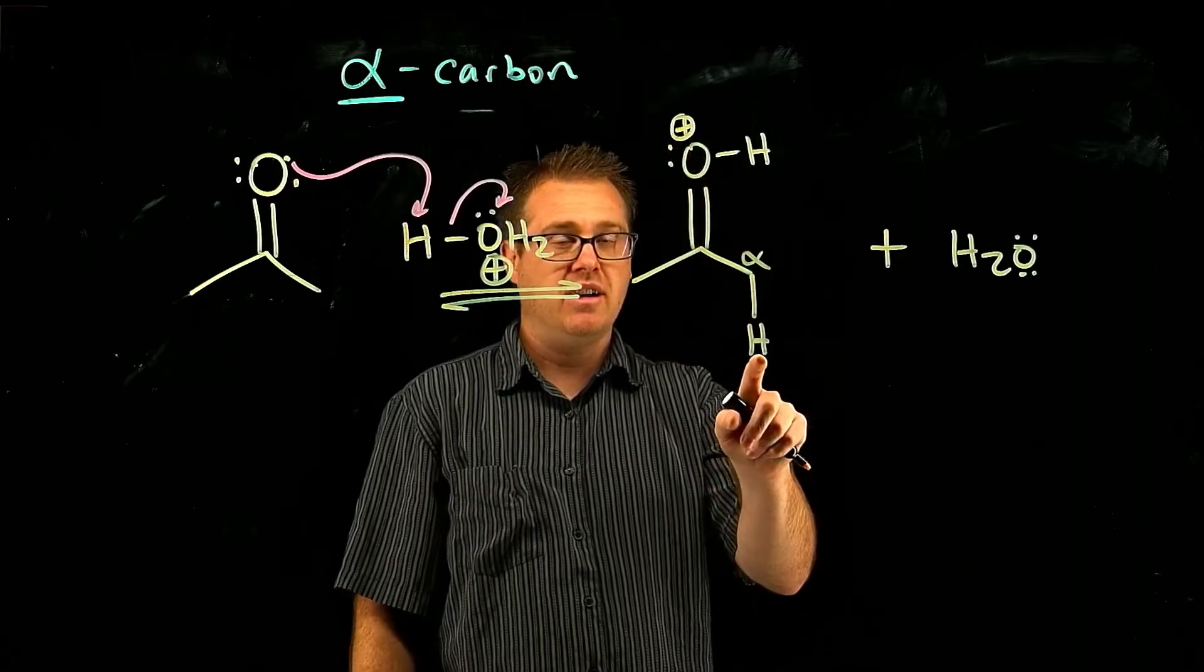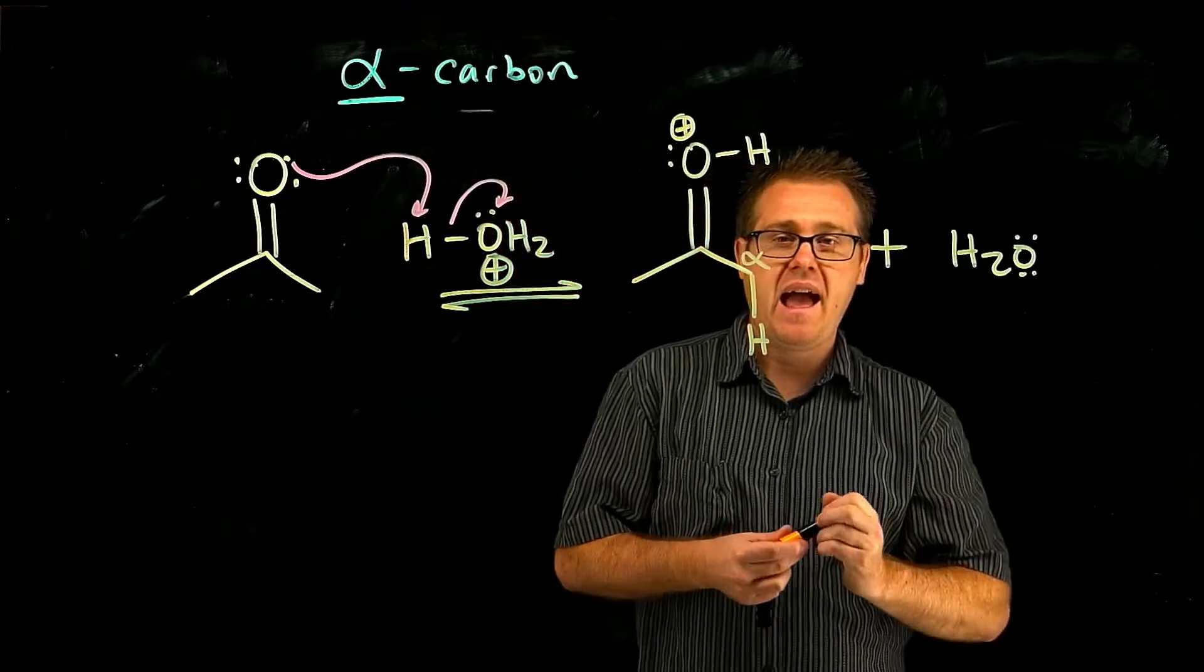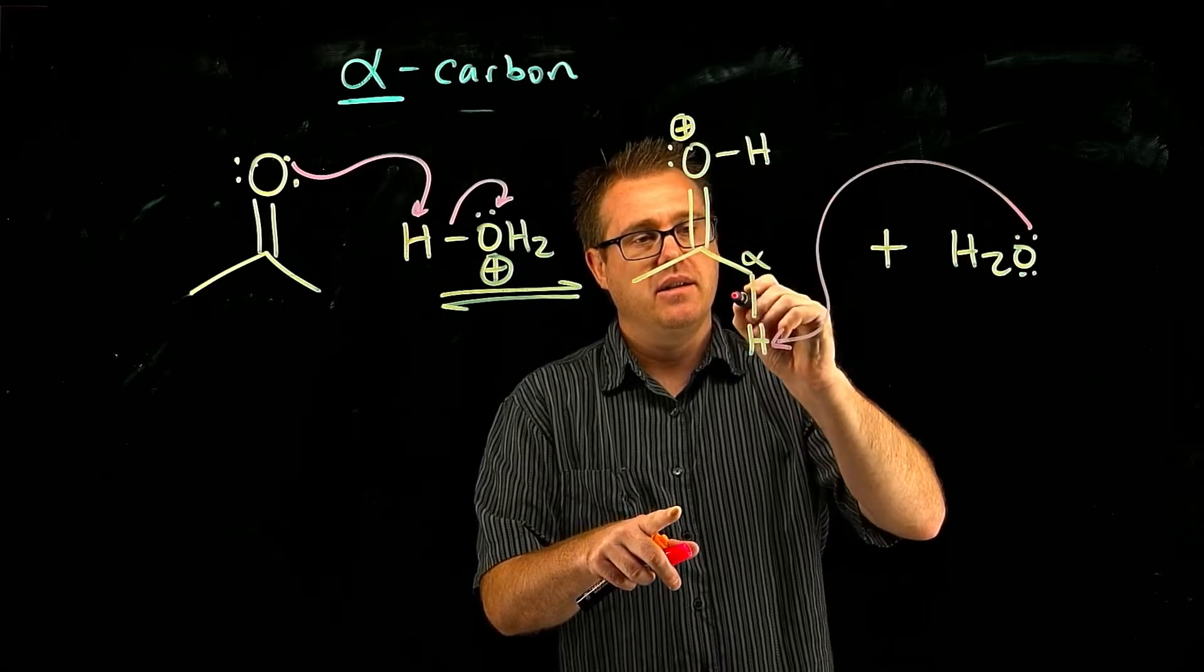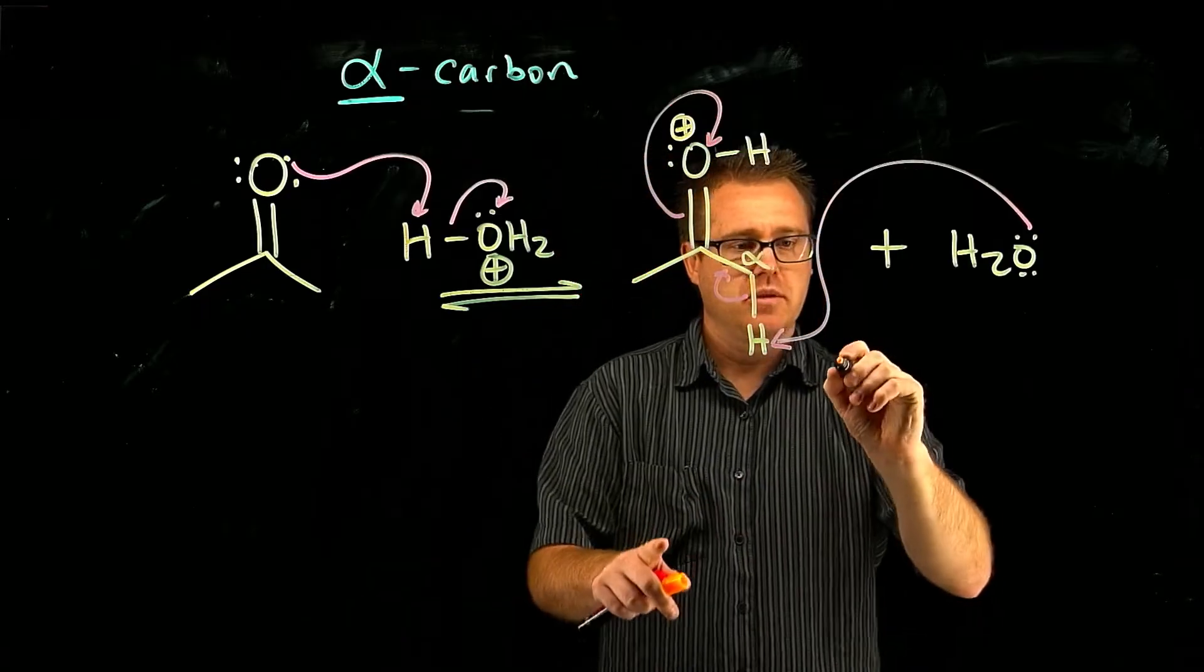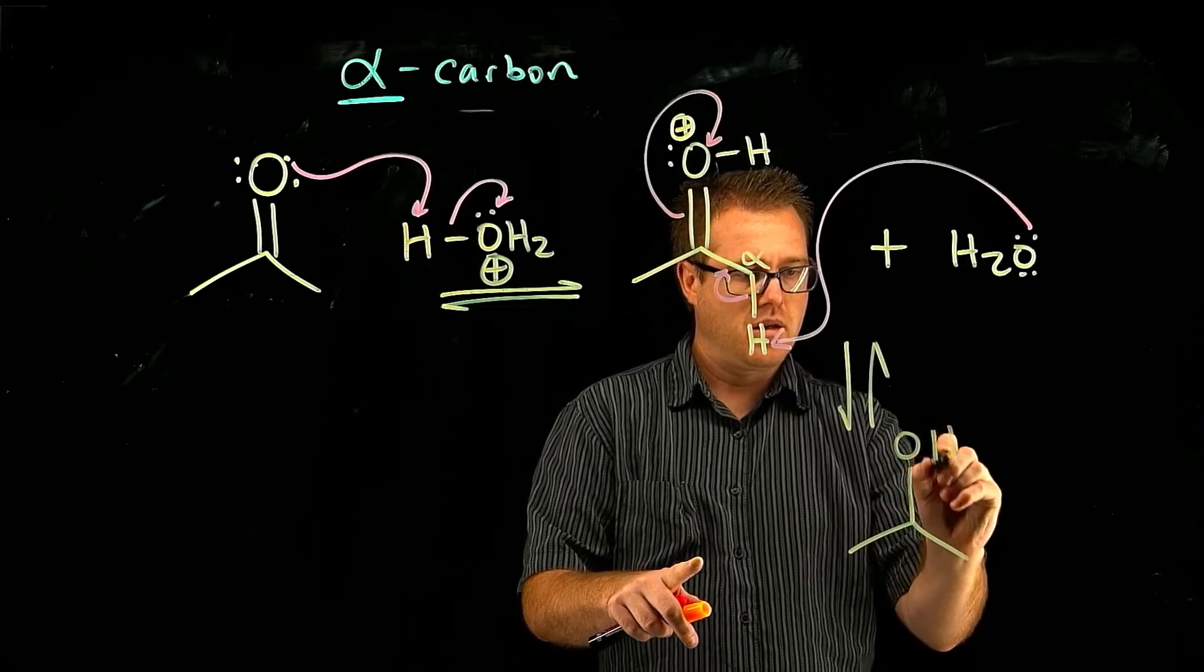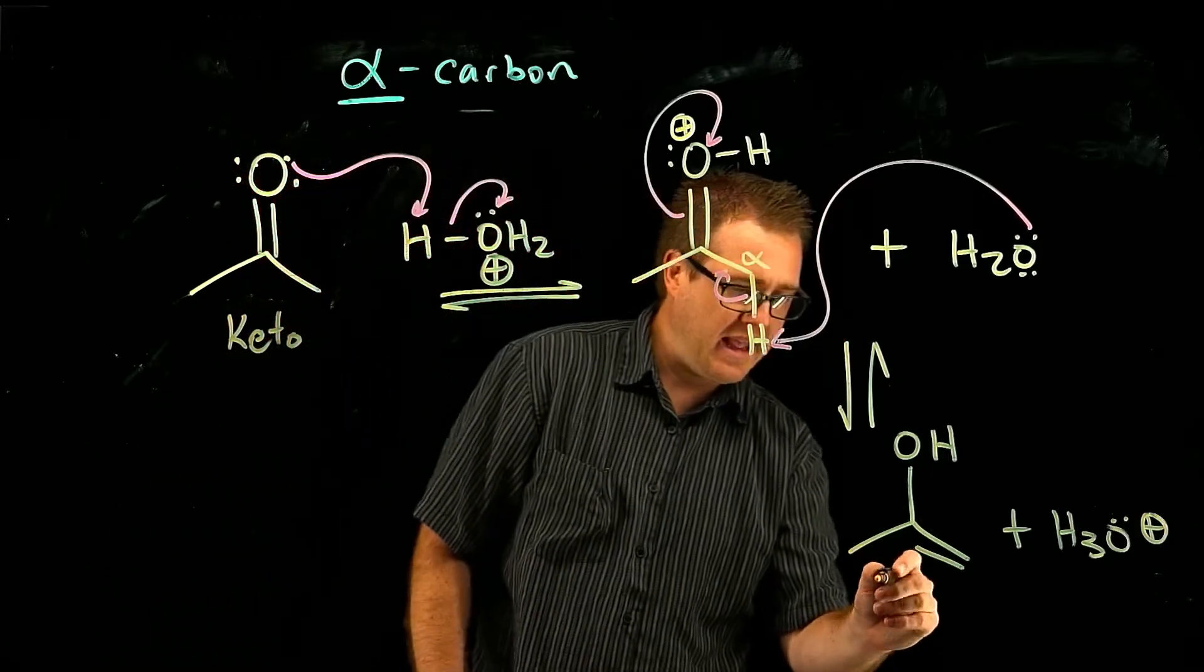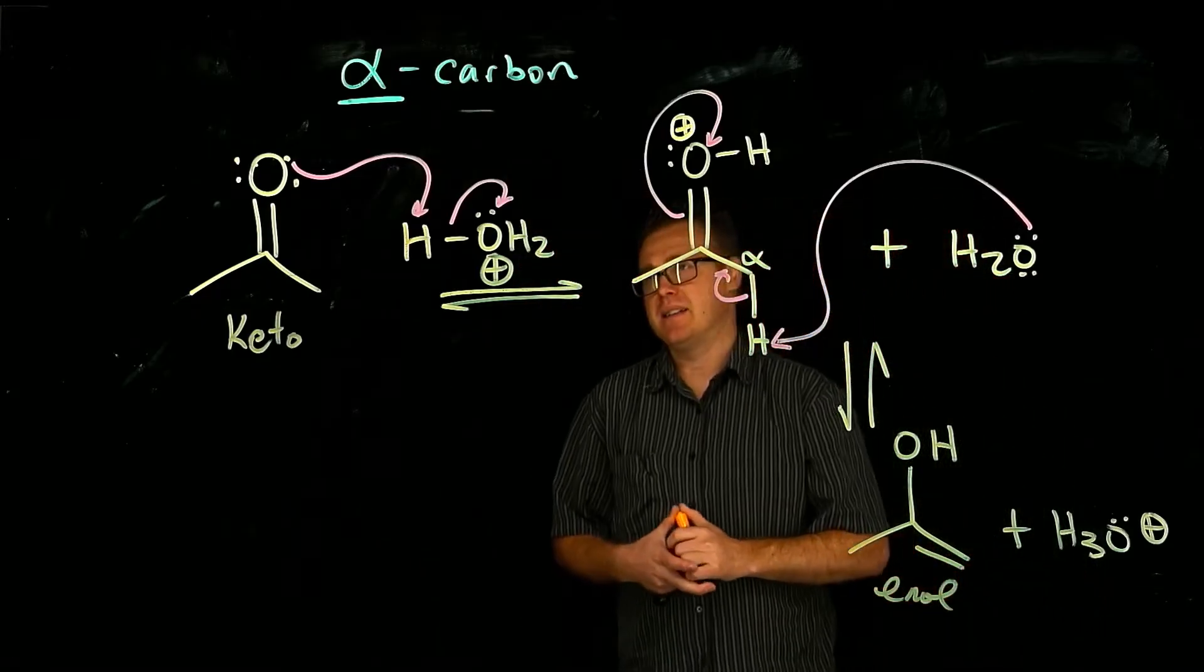And now we have an alpha carbon. And attached to the alpha carbon is a proton. So we refer to this proton as the alpha proton or the alpha hydrogen. And that alpha hydrogen is acidic. We generated some base. So that can come in, break that bond, and like that. And then that's going to give us our enol. So there's our keto, the keto form, and the enol. And so that right there is the acid-catalyzed tautomerization.